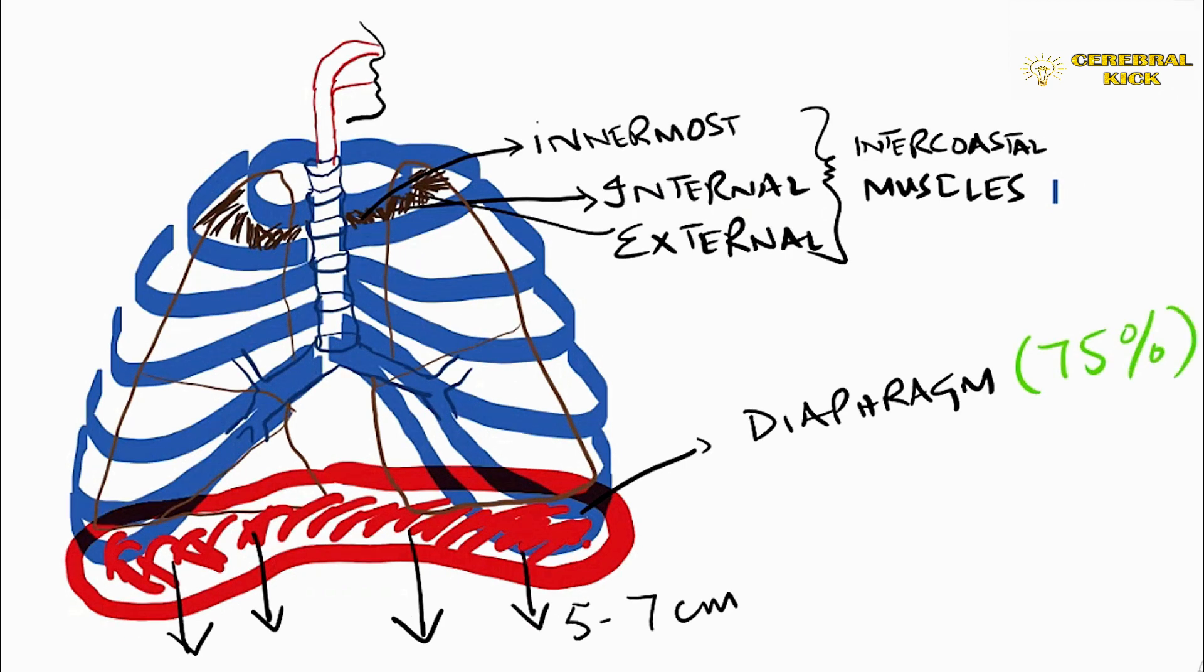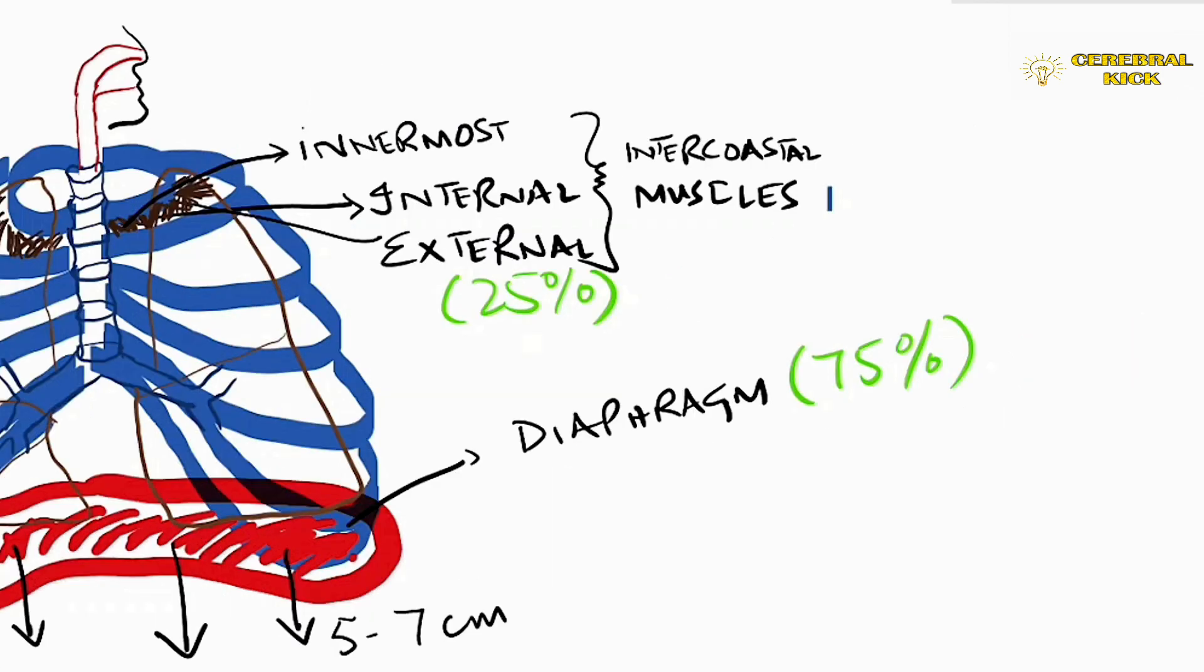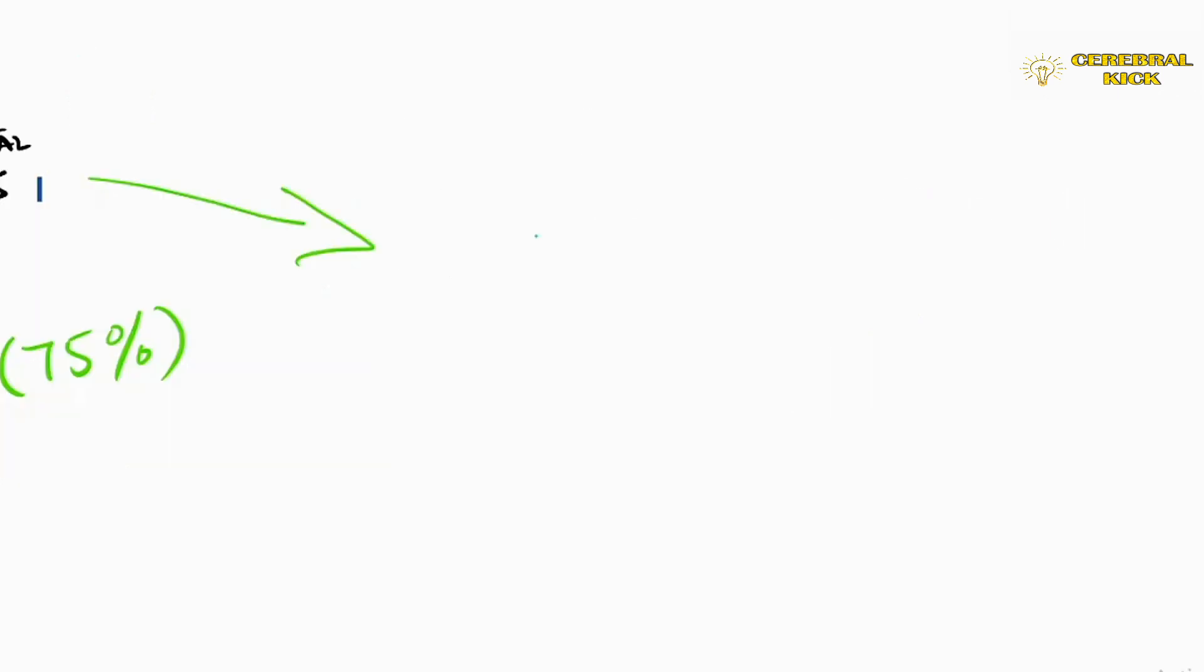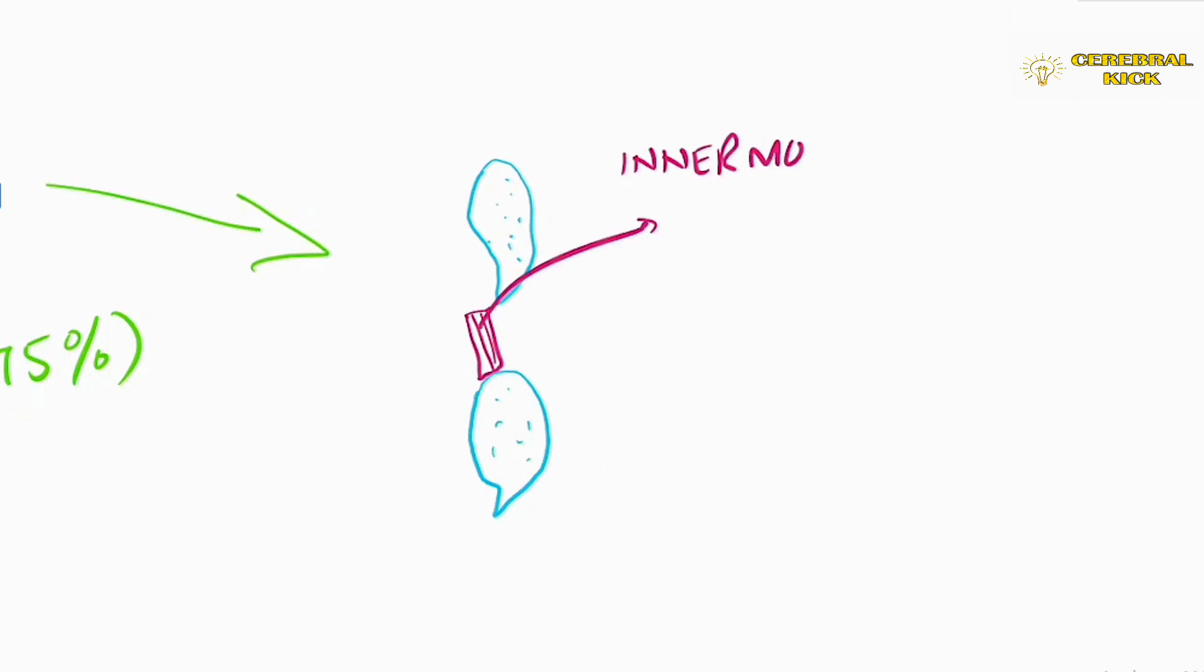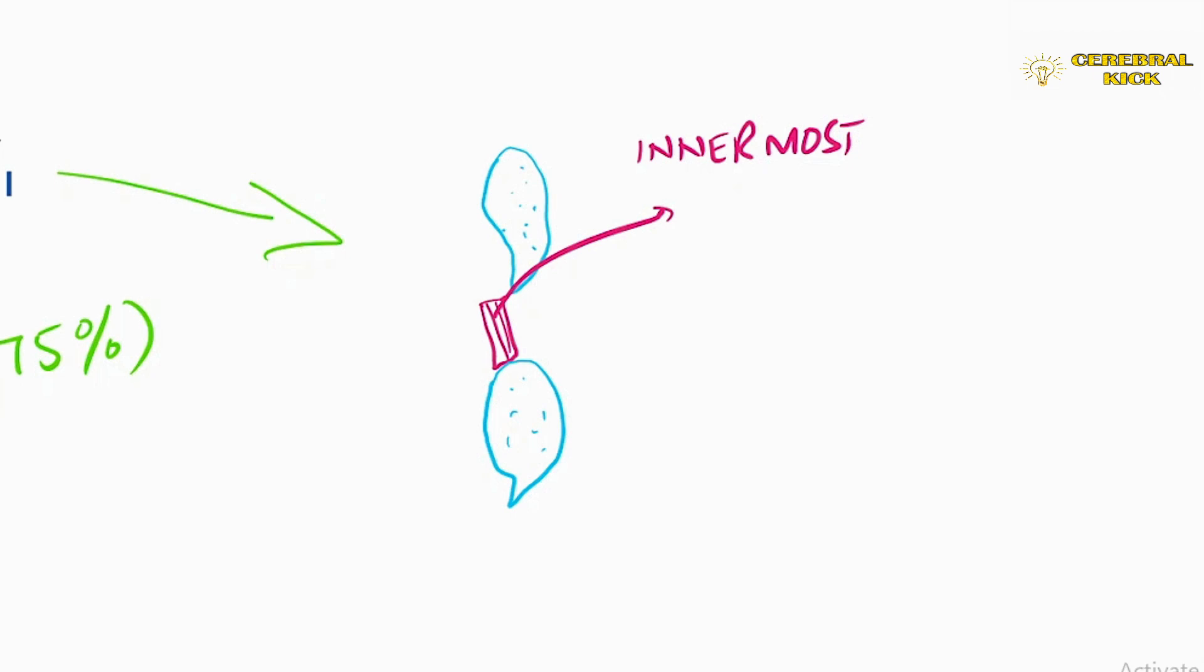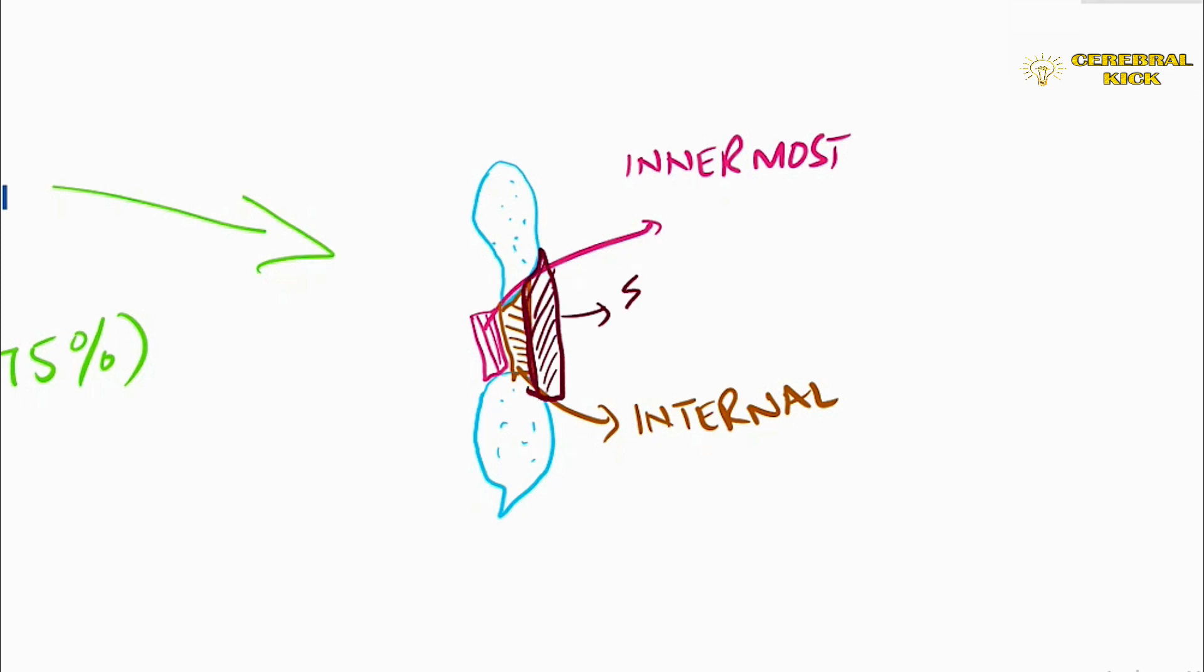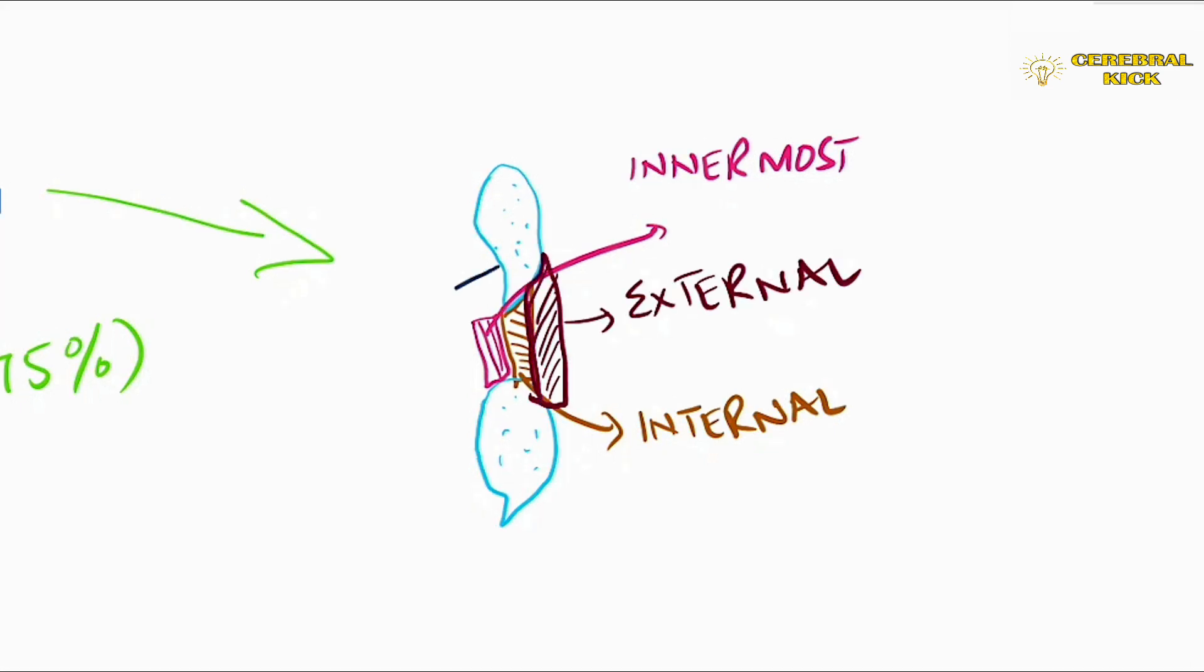The rest of 25% is through external intercostal muscle. If we dissect the rib cross-sectionally, you can see the intercostal groove on the lower aspect of the rib. This is the innermost, then the internal intercostal muscle marked in brown, and then the external intercostal muscle.